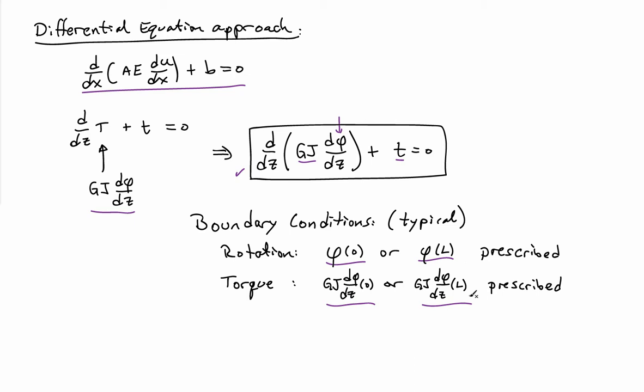All other torques applied to the system, in other words those between 0 and L, they are represented by little t. So if you have a point torque in the middle of the bar, it's represented by a delta function in little t.